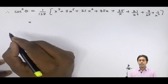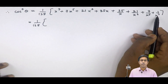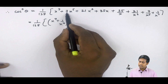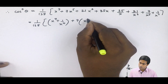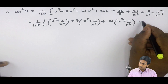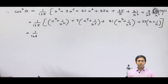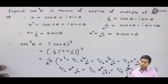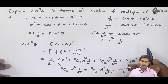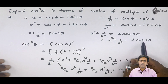Now what we will do is take the terms having similar powers together. So 1 over 128 is outside. We can see x raised to 7 and 1 over x raised to 7 are paired together. Next, 7 times x raised to 5 and 7 over x raised to 5 — taking 7 common gives x raised to 5 plus 1 over x raised to 5. Similarly, 21 times (x cubed plus 1 over x cubed), and 35 times (x plus 1 over x). Now applying the formula x raised to n plus 1 over x raised to n equals 2 cos(nθ), the term x raised to 7 plus 1 over x raised to 7 gives 2 cos 7 theta.